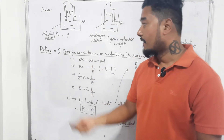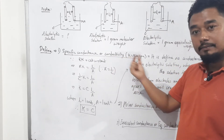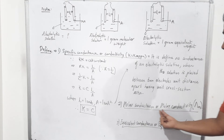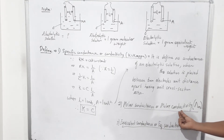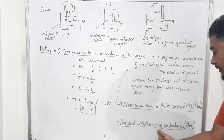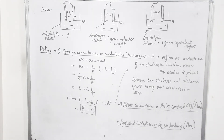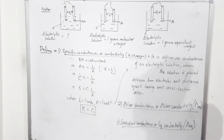Before I explain further, we will cover three definitions. First is specific conductance, also known as conductivity, whose symbol is kappa (κ). Next is molar conductance, also known as molar conductivity, with symbol capital lambda with suffix m (Λm). Third is equivalent conductance or equivalent conductivity, with symbol capital lambda with suffix eq (Λeq).